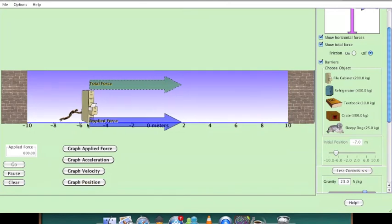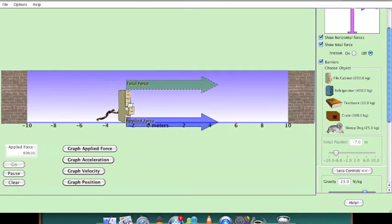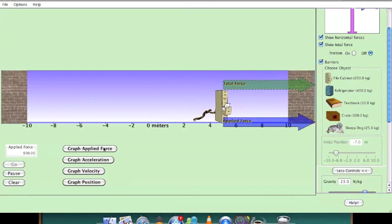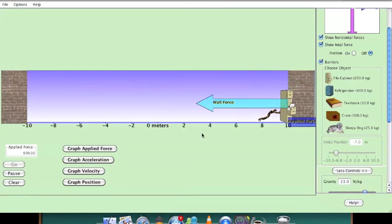This is the guy. This is the applied force. And since this is the only force, this becomes the total force. And he will crash at this point. So this is where he crashed.